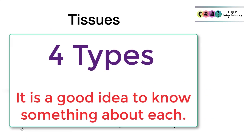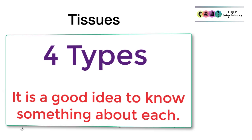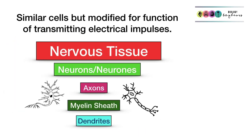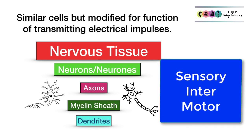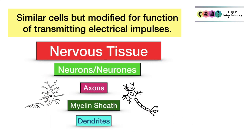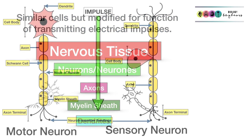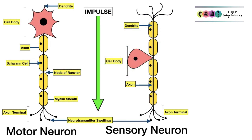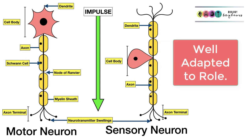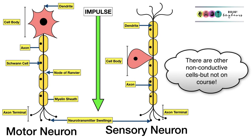There are four animal tissue types and it's a good idea to be able to list them and give examples of each. The first is nervous tissue, which is made up of special nerve cells called neurons. There are three types: sensory, inter, and motor neurons. These cells are specially adapted for transmitting electrical impulses. Looking at pictures of motor and sensory neurons, you can see they are well adapted with dendrites, myelin sheaths, and numerous other features.